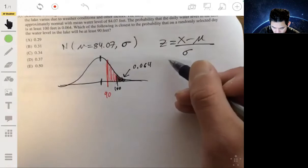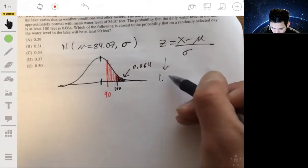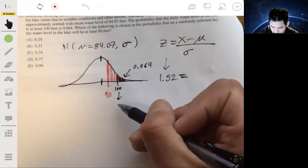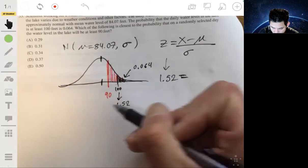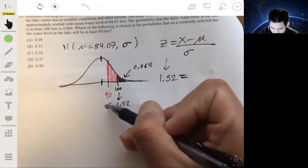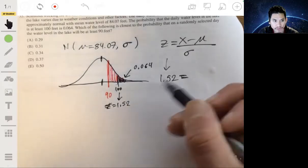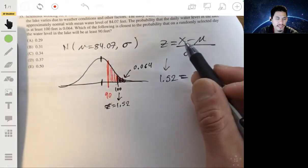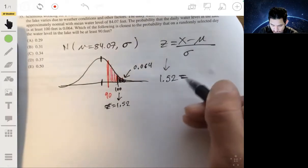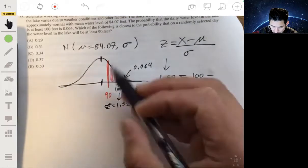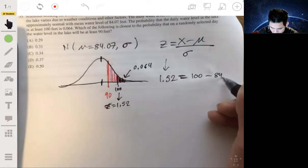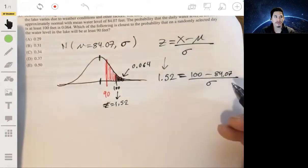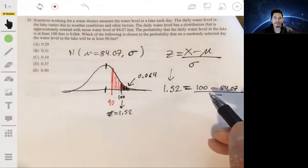So let's go over here. 1.52, that's our Z. So 1.52 equals, X is 100, mean is 84.07. So now it just becomes an algebra problem, which hopefully should be easy.